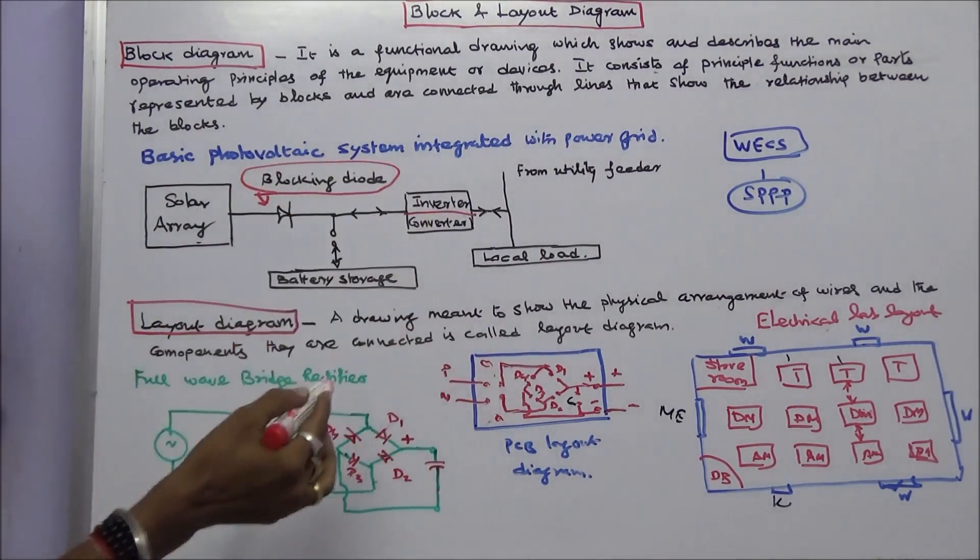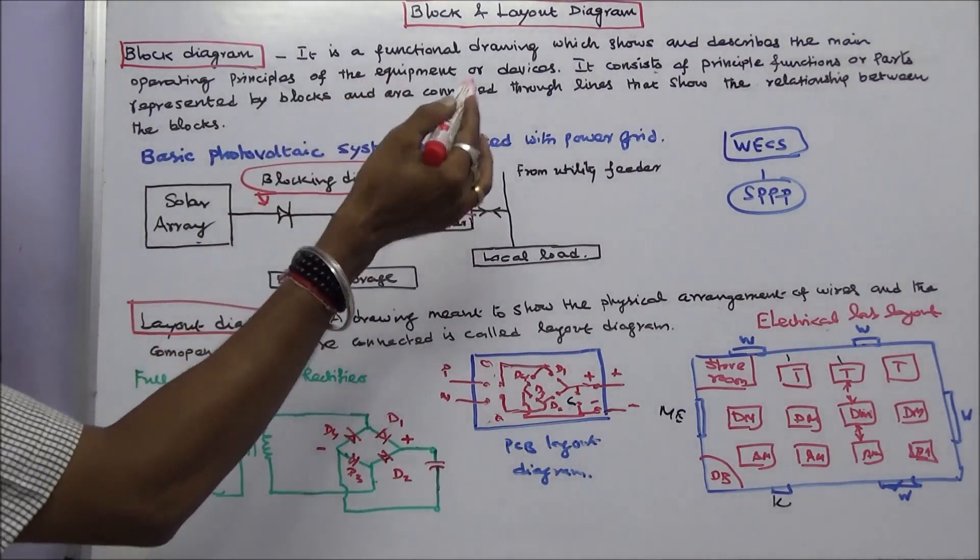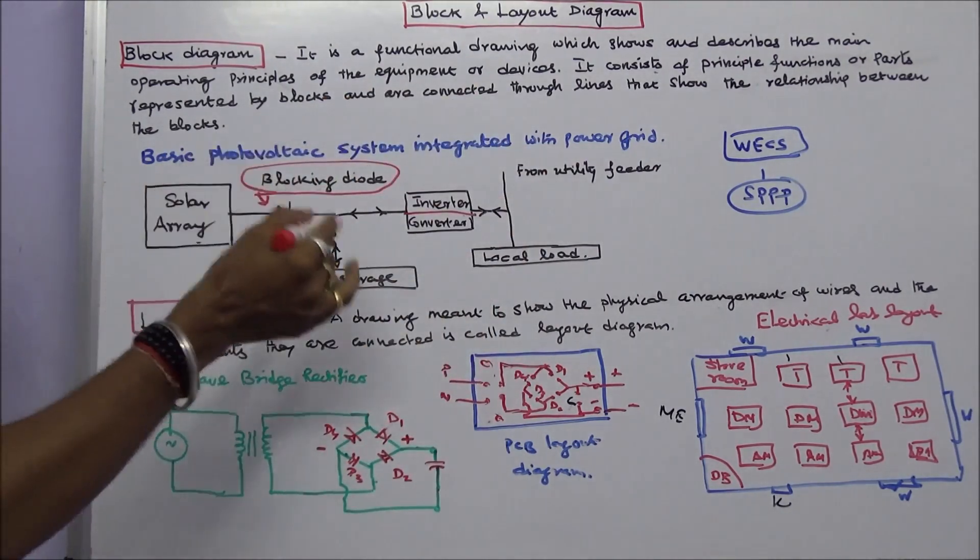You know the operation of basic photovoltaic integrated system with the help of this block diagram. This is the role of block diagram.